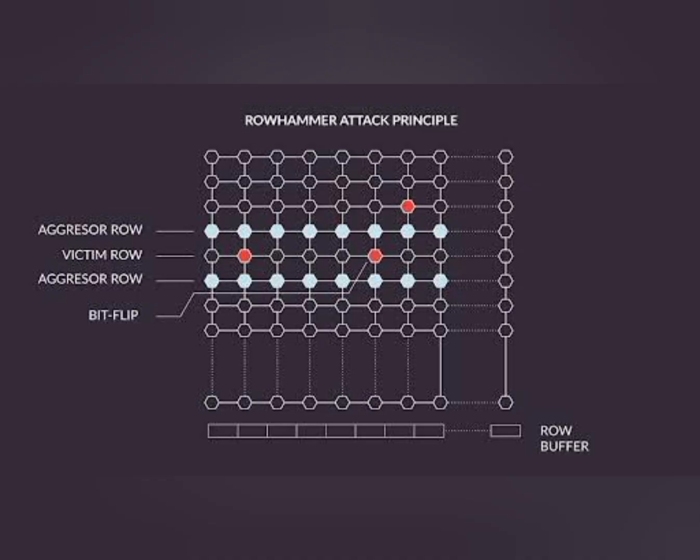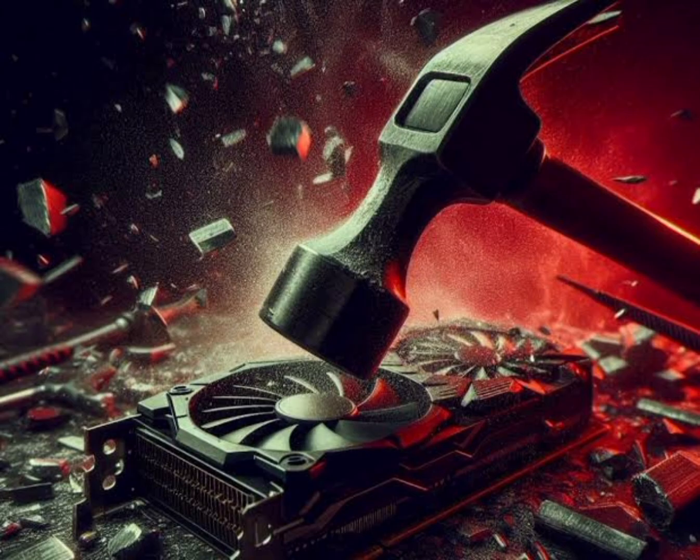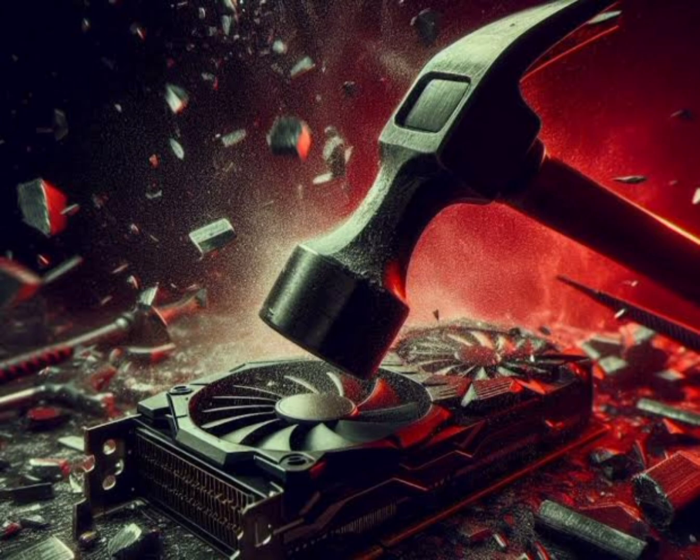What does this actually mean for regular people using devices every day? GPUs are everywhere now. Think about your smartphone — if it's vulnerable, GPU Hammer could potentially be used to compromise your personal data right there in your pocket. Scale up to servers and data centers, and a successful attack could mean major data breaches or knocking critical systems offline. Cloud providers rely heavily on GPUs, so they'd need to seriously revisit their security posture — which ultimately affects basically everyone using cloud services, from streaming movies to running business applications.